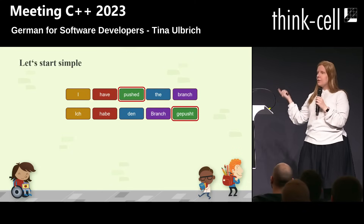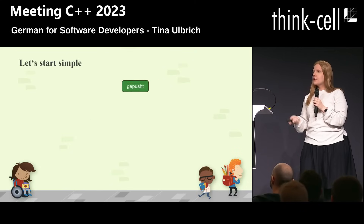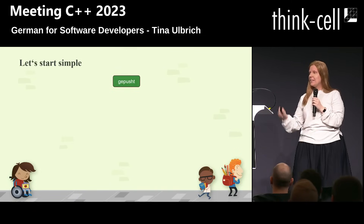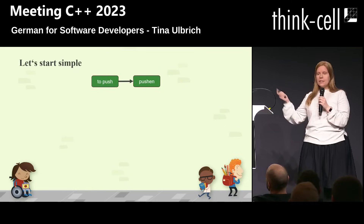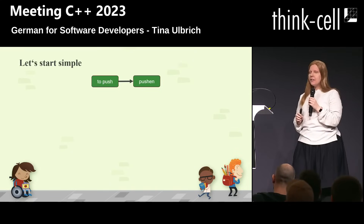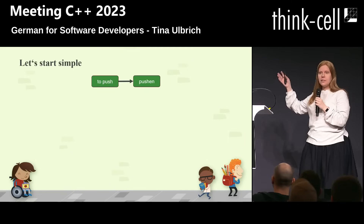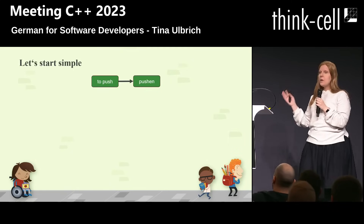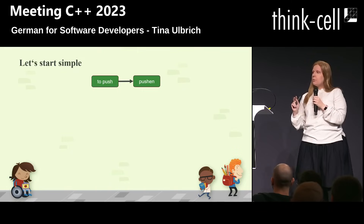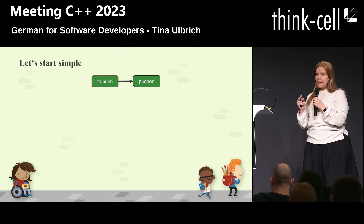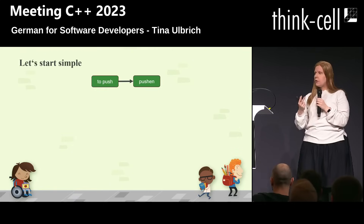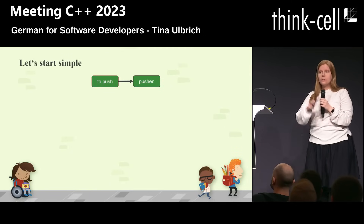Let's take a closer look at this word "gepusht." The basic form of this word is actually "pushen," which of course is "to push." You might already know that German is a little bit complicated of a language, and I could show you a full conjugation table of this word in perfect German, but we will be here until tomorrow for this one word. So I thought I will show you the two tenses that you might need the most — the present and the past. And I decided on three pronouns which we might use the most, just to make this a little bit faster.